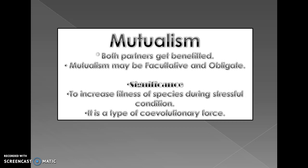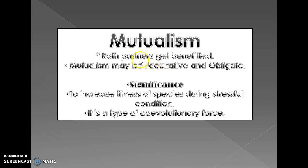In mutualism, it may be facultative or obligate. In facultative mutualism, both partners can survive if they cannot coexist together — they can live without each other. In obligate mutualism, neither participant can survive without the other — they both are important for each other. For example, lichens — the association between algae and fungi. In facultative, examples include ants getting nutrition. Togetherness is not compulsory in facultative mutualism.